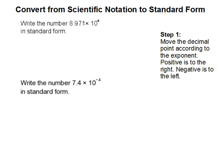Convert from scientific notation to standard form. In this problem we are going to write a set of numbers in scientific notation in standard form. Step 1: Move the decimal point according to the exponent. Positive is to the right and negative is to the left.